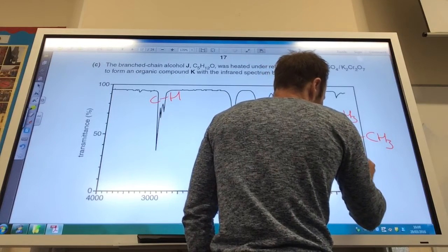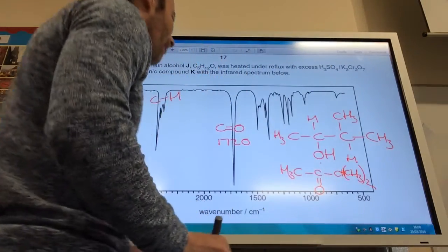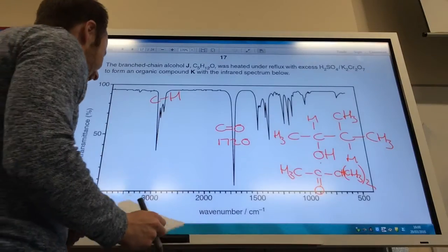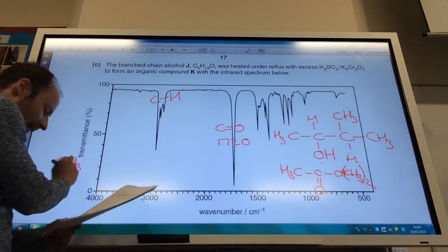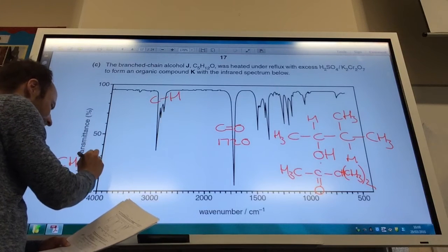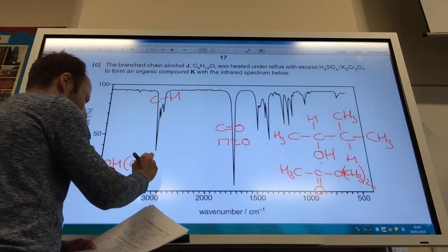The ketone that I make is going to be this boy here. CH, CH3, and then I've got two of those there.